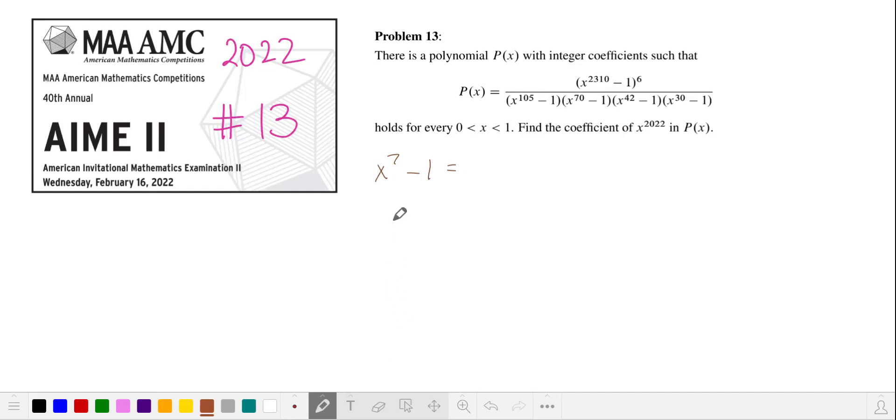When you want to factorize x to a power minus 1, you can pull out a factor of x minus 1. And your second factor is all of these other powers of x summed together.